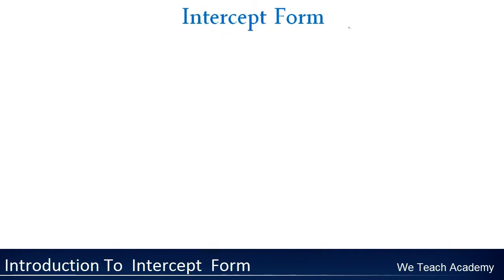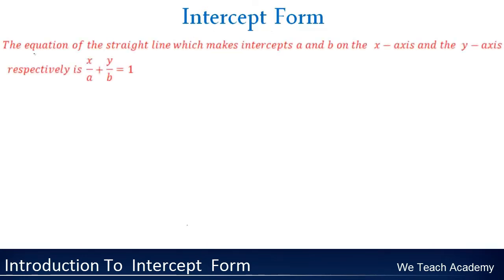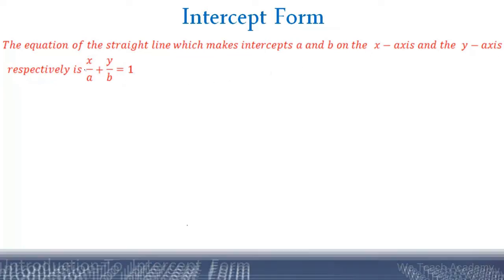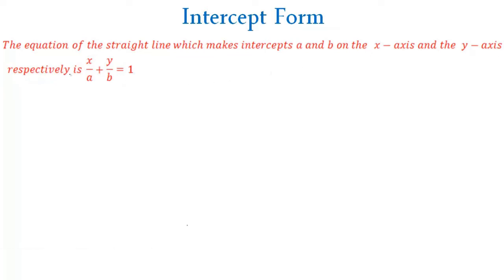We are going to find the equation by solving a theorem: the equation of a straight line which makes intercepts a and b on the x-axis and the y-axis respectively is x/a + y/b = 1.